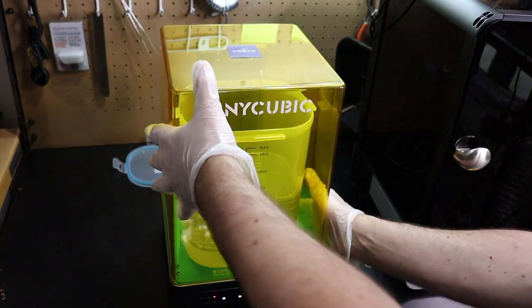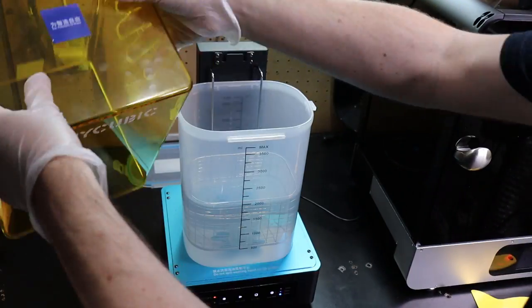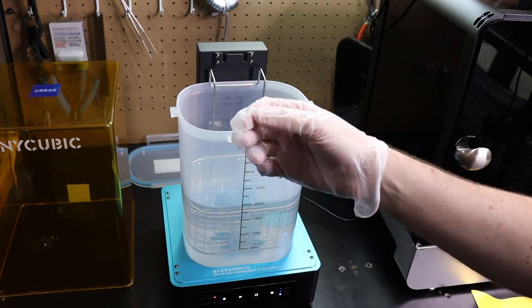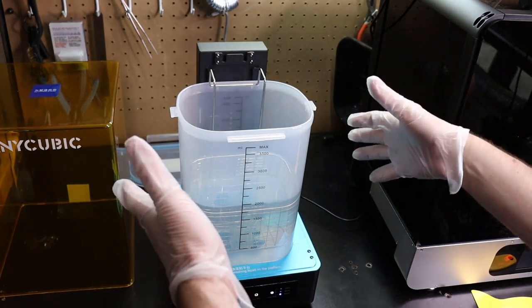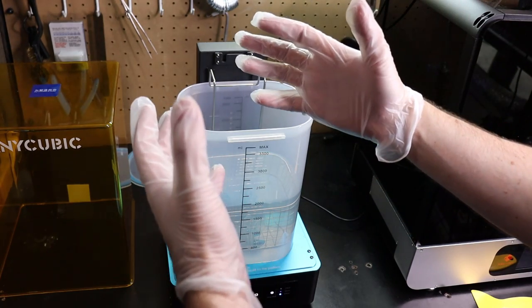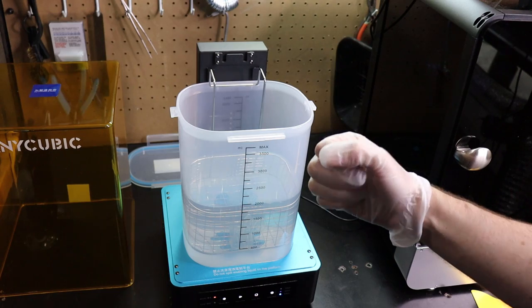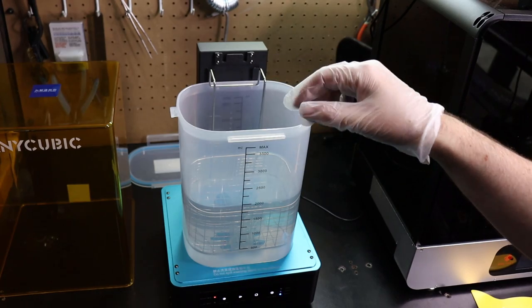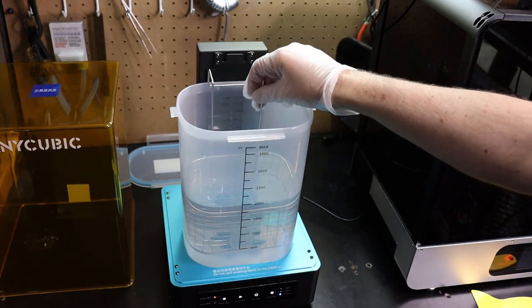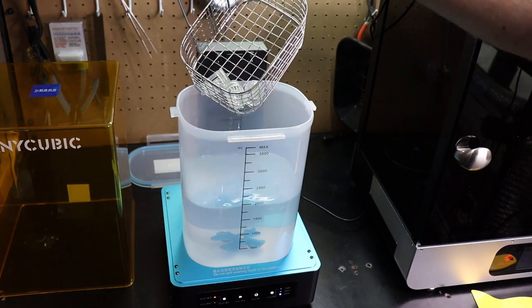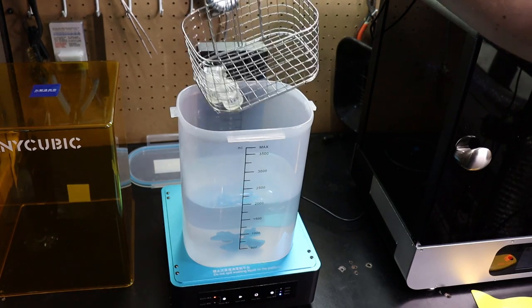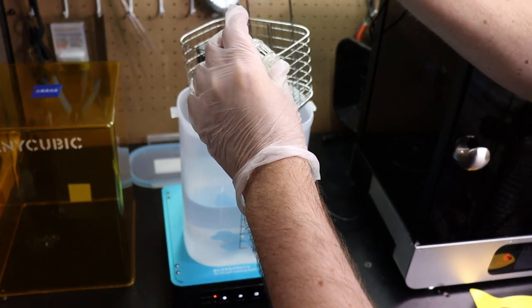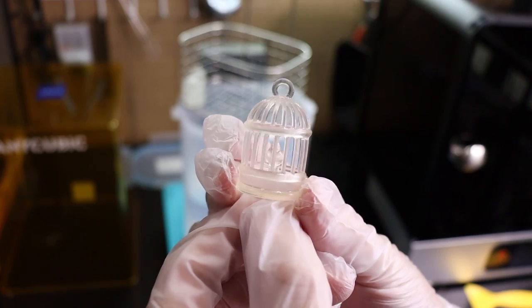All right, so now that that's done, I can take this off. So just grab this and anytime working with resin stuff, as you should already know if you're watching this video about a washing system for your resin, wear gloves and probably a mask and everything too. Because this resin is really bad for you when it's not cured and this is not cured. So I'm going to let this kind of drip dry for the most part, but I can show you one of my bird cages out of it. There we go.